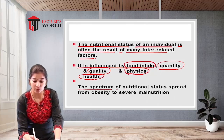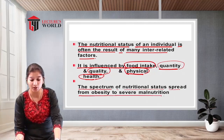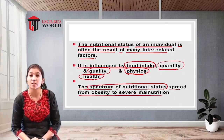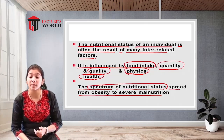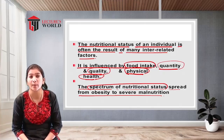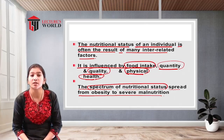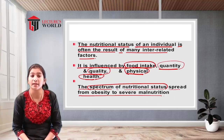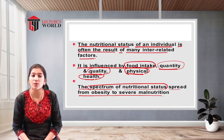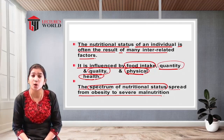The spectrum of nutritional status spreads from obesity to severe malnutrition. Problems related to nutritional status range from excessive weight gain to malnutrition. A very common form is protein energy malnutrition (PEM), especially in children. PEM involves two conditions: kwashiorkor, where protein deficiency is visible, and marasmus, where there is deficiency of both protein and calories.